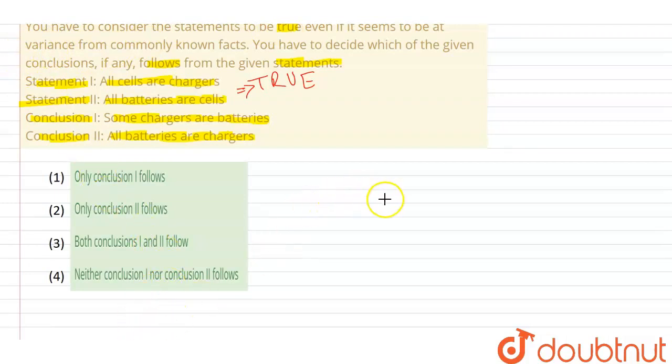First of all, they said that all cells are chargers. So all cells are chargers. This is our all cells are chargers. Now, all batteries are cells. All batteries are cells. So this is our battery. This is our main diagram.